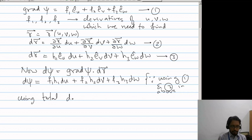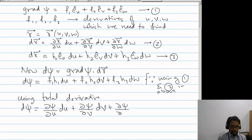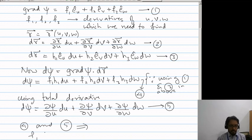Using total derivatives, d psi is ∂psi/∂u du plus ∂psi/∂v dv plus ∂psi/∂w dw. If I call this as equation 4 and this as equation 5, and comparing equations 4 and 5, this implies f1 h1 is ∂psi/∂u, f2 h2 is ∂psi/∂v, f3 h3 is ∂psi/∂w.